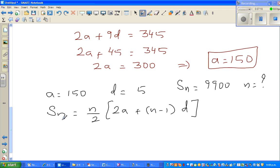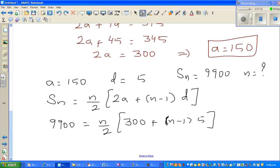In place of S_n I can put 9900, so 9900 equals n over 2 times 2a. Since a is 150, 2a becomes 300 plus n minus 1 times d which is 5. Just substituting. If I multiply both sides by 2 to get rid of this 2, this and this will get cancelled.